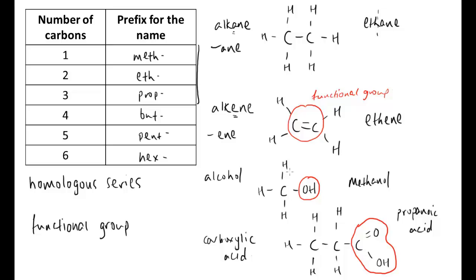This time we only have one carbon and that's why we have meth rather than eth. Alcohols are denoted by anol, hence methanol. And finally the carboxylic acids, this one has three carbons, so we have the prop prefix and it ends in anoic acid.